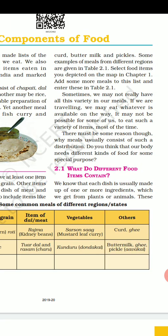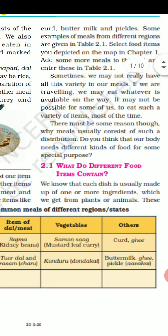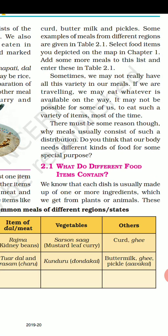There must be some reasons why meals usually consist of such a distribution. Do you think that our body needs different kinds of food for some special purpose? Our food contains different kinds of ingredients. Different ingredients means different food items, which means they have different nutrients. We all know that each dish is usually made up of one or more ingredients which we get from plants or animals.